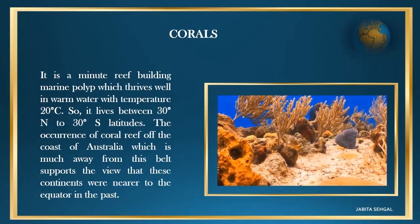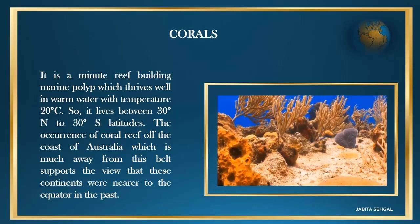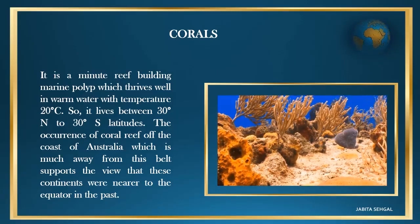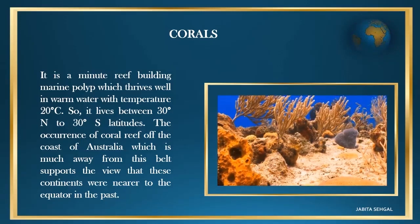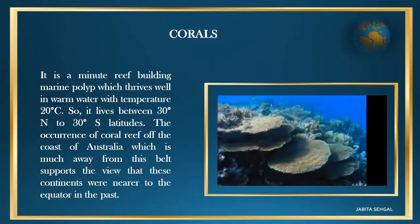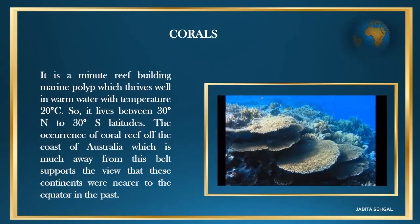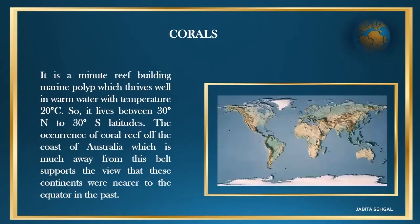Our next evidence is corals. Coral is a minute reef-building marine polyp which thrives in warm water at temperatures of about 20 degrees Celsius, living between 30 degrees north to 30 degrees south latitudes. The occurrence of coral reefs off the coast of Australia, which is much further away from this belt, supports the view that these continents were nearer to the equator in the past.